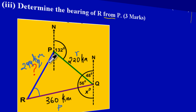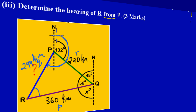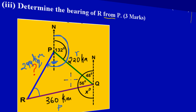With my pencil at P, I go from the north line and come around clockwise until I touch the line segment connecting P to R. That angular turn is the bearing of R from P. We know from north to the green line is 132 degrees — that was given. So we need to find the angle RPQ inside the triangle, because we can add it to 132 to get the bearing.